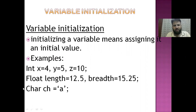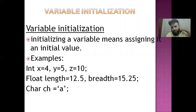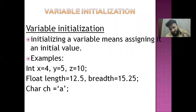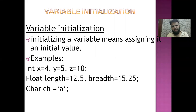Variable initialization means assigning a variable an initial value. For example: int x = 4, y = 5, z = 10. When we give the first value to a variable, it is called variable initialization. In variable declaration we just mention the data type — integer or float — and in initialization the values are given according to their data type.